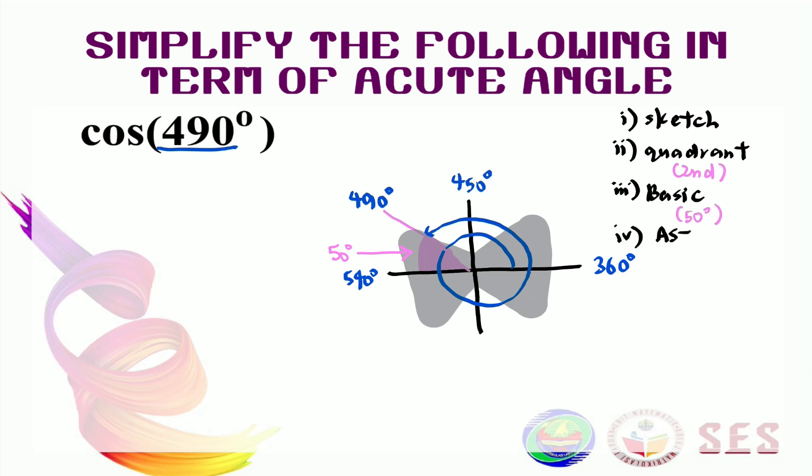And lastly, we need to put ASTC in our diagram here. So this is A. This is S. This is T. And this is C. So our angle here lies in the second quadrant with S. That means only sine function will be positive here. Our function here is cos. So in second quadrant, cos will be negative. So let's simplify here. The format will be sign, function, and basic angle. So simplifying this, the sign for this is negative. And the function here is cos. And the basic angle is 50 degrees.